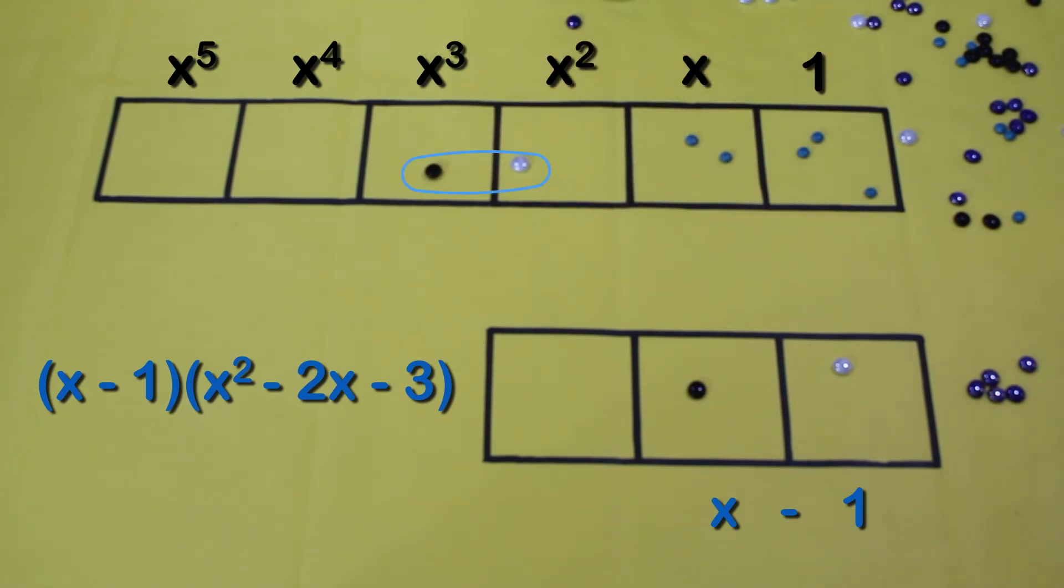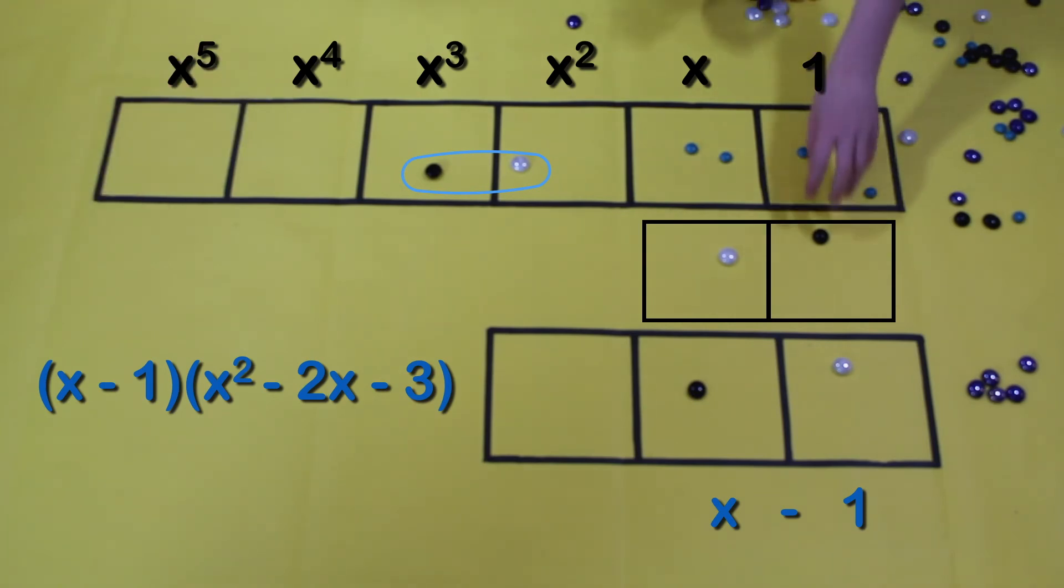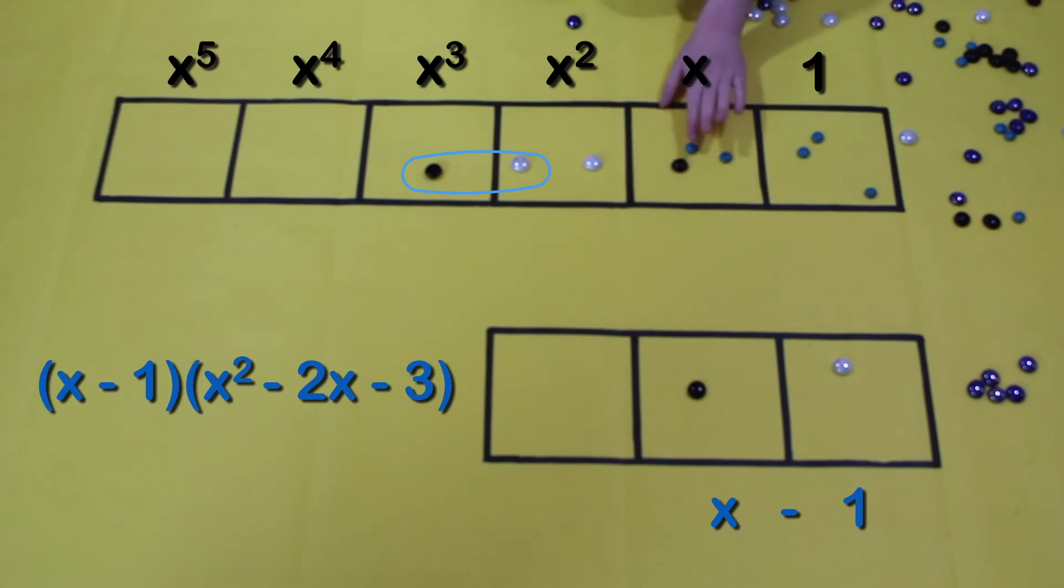Alright, but what are we going to do now? Because how do you do it with negatives? So what's the opposite of x minus 1? Well, negative x plus 1. Perfect. Which would be this. Now let's start working.